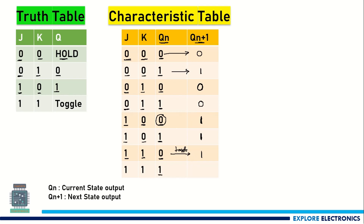Similarly, if the current state is 1 with J=1, K=1 as input, this will be toggled to 0. This is how the characteristic table will be for the JK flip-flop.